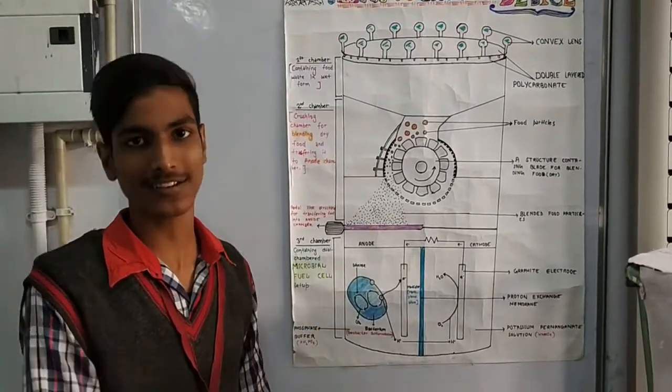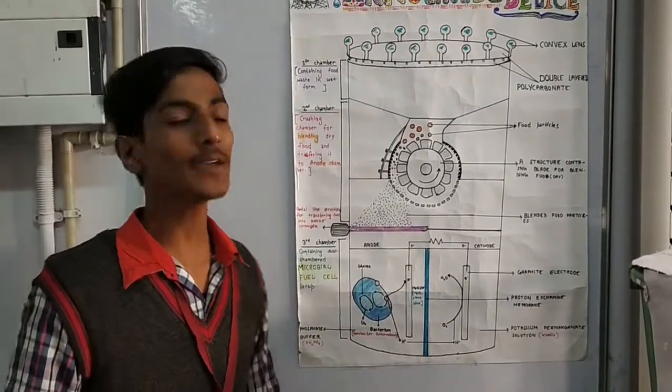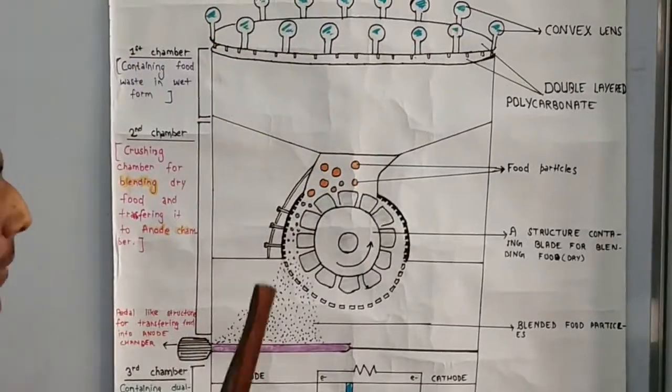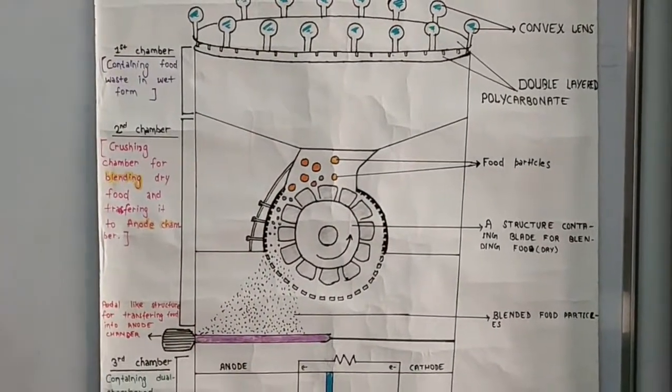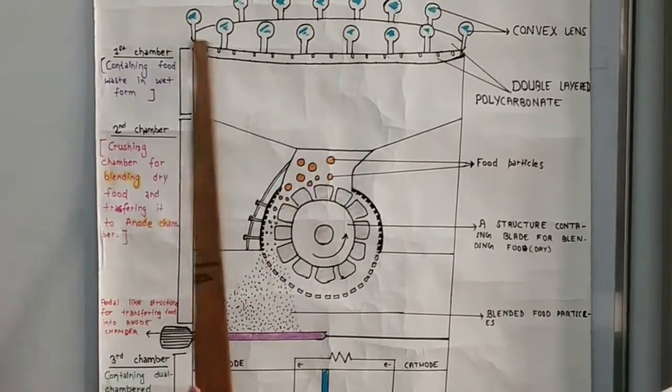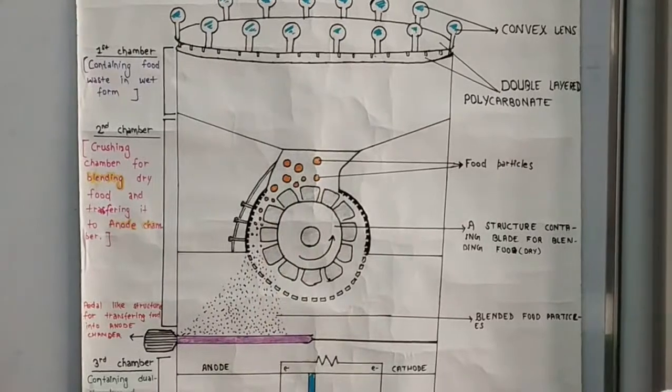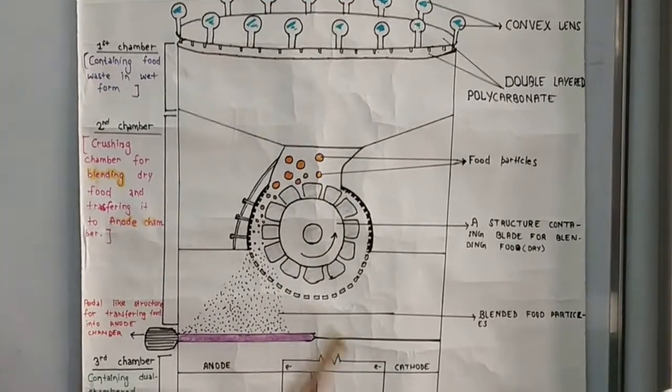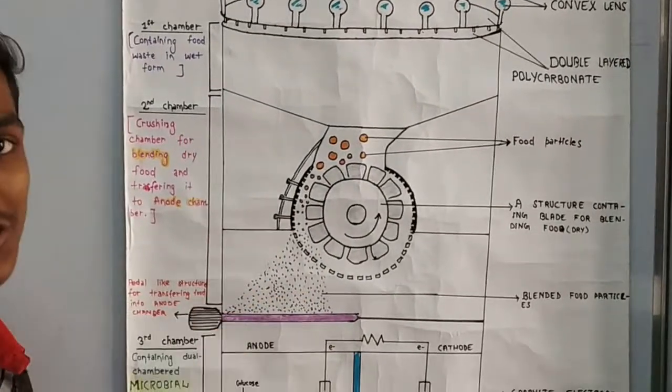We made three chambers: a heating chamber, a crushing chamber, and a dual chamber microbial fuel cell. In the first chamber, we use a heating chamber so that our food waste will soften from heating and then it will be easier for crushing. We will add food waste in the first chamber.